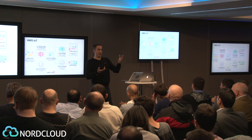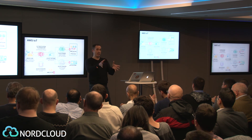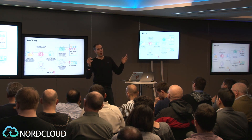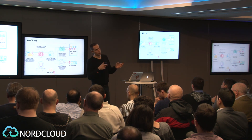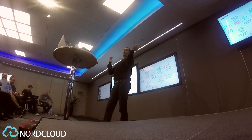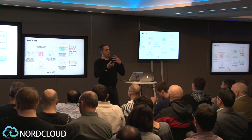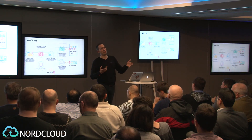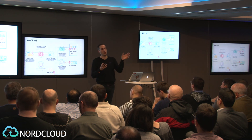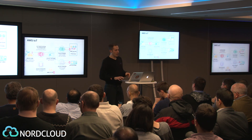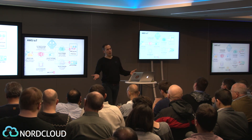A common scenario in IoT projects is having different devices with different hardware requiring different software updates. For example, you might launch air quality probes based on Arduino, then build the next generation on Raspberry Pis or Intel Edison. The device registry lets you know which devices run on which platform and redirect software updates to them accordingly.